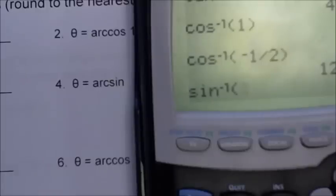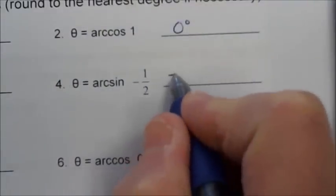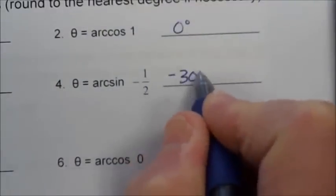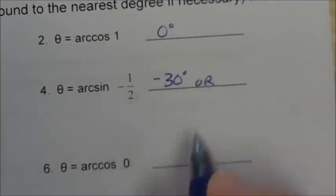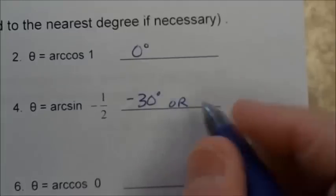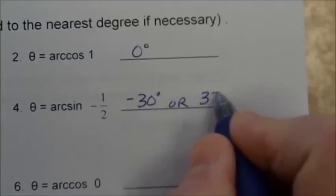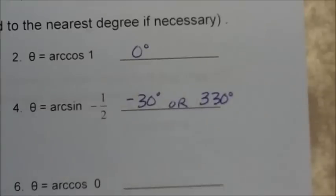2nd cos, negative 1 half — negative 30 degrees. So negative 30 degrees, or if we add 360 to that and want a positive degree angle measure, 330 degrees. We get that simply by adding 360 to negative 30.